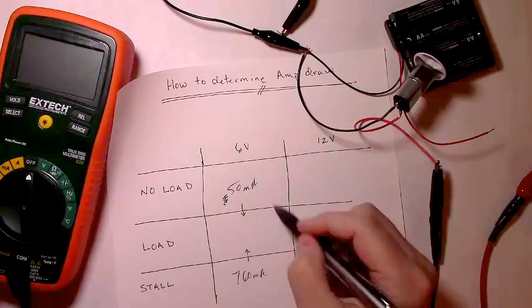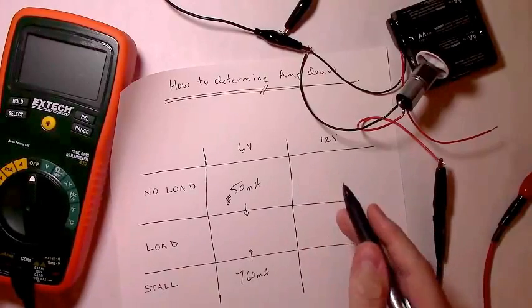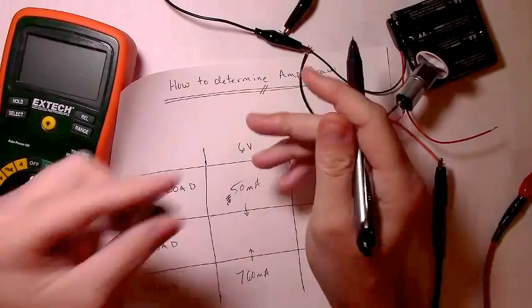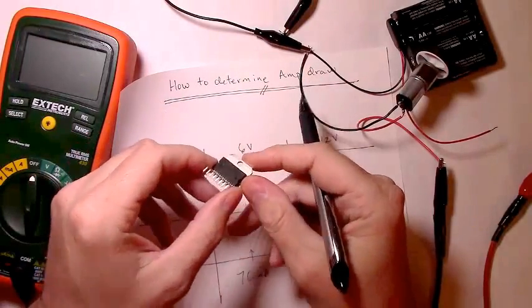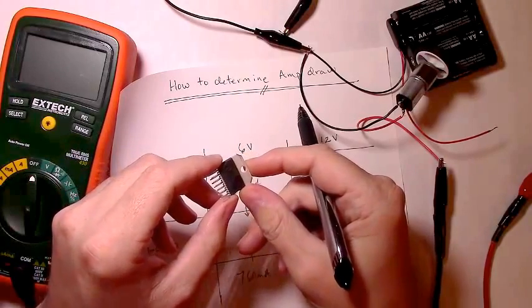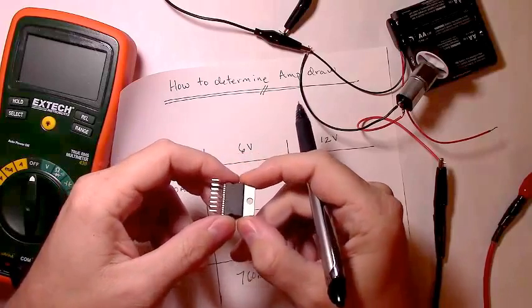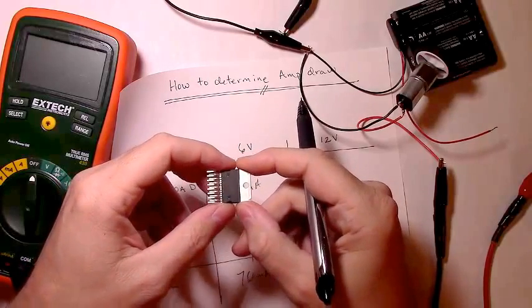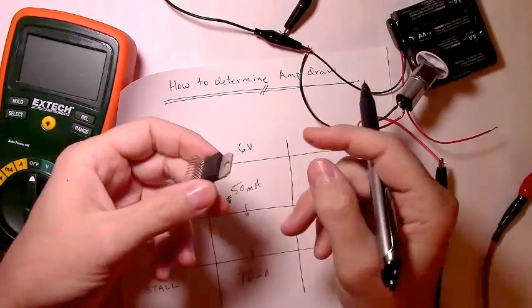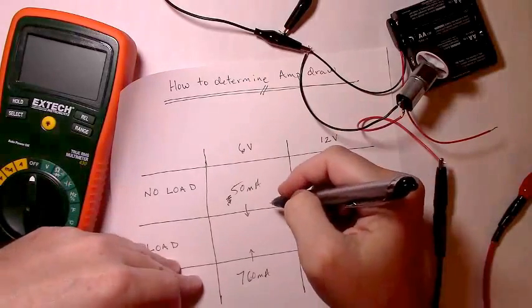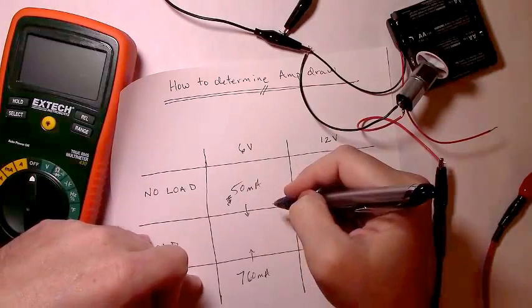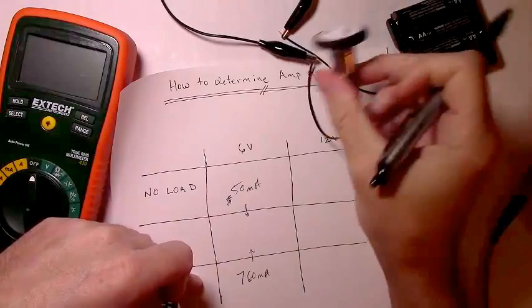So if you had a motor driver or a circuit like, a chip like, for example, this one. This is a L298N and at its minimum, it can deal with 2 amps. So something like this chip would be, well, almost overkill for this little motor.